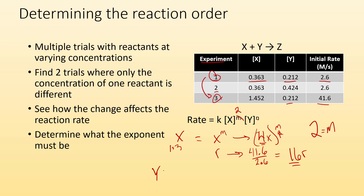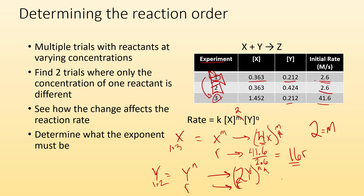Now I do the same process for Y. I find two trials where Y's concentration changes but X stays the same — that's trials one and two. Between trials one and two, we double the concentration of Y. But what happens to the rate? The rate was 2.6 and it stayed 2.6 — it didn't change at all. So N has to be zero; that's the only way that can happen. Our final rate law expression is R equals K times X squared. You could write times Y to the zero power, but anything to the zero is just one, so you don't need to write it.